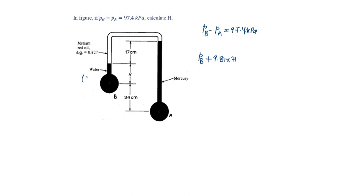Density of water is 1 and density of mercury is 13.6. Plus specific gravity is 0.827 into gamma W is 9.81 into 17 centimeters.